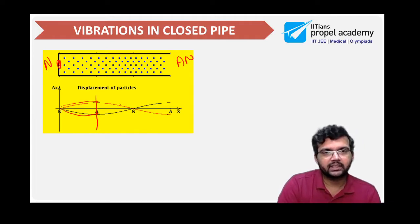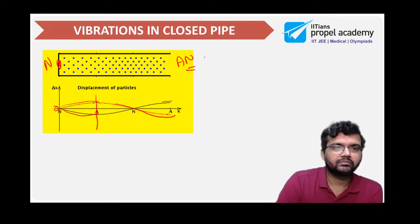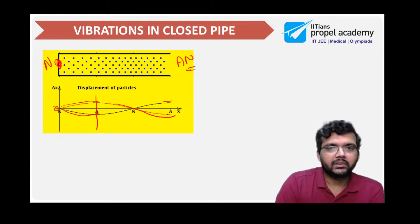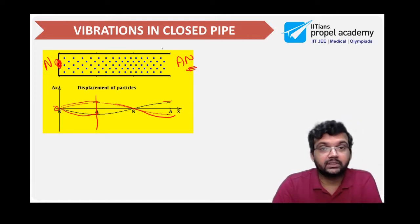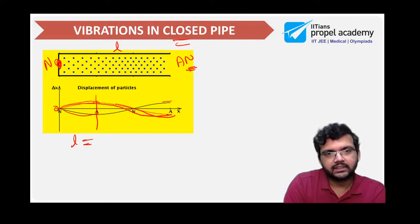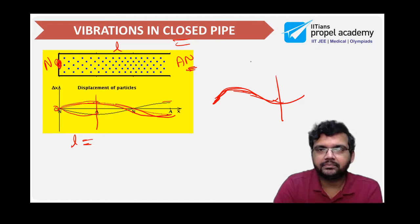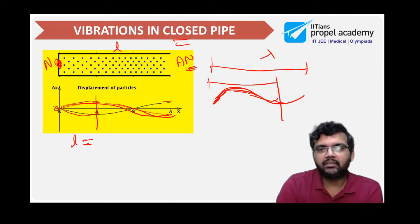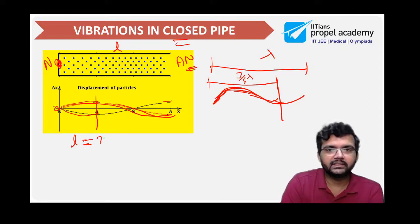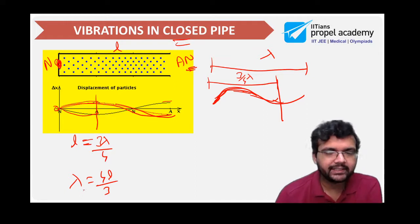The second possibility has a node at the closed end going all the way to an anti-node at the open end, where L equals 3 lambda by 4, or lambda is 4L by 3. Now let's take a summary with at least three pipes to compare. The first possibility: node at the closed end, anti-node at the open edge — shape gives L equals lambda by 4, or lambda is 4L. The next possibility: L equals 3 lambda by 4, or lambda is 4L by 3.